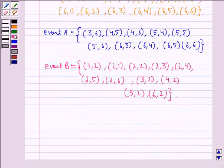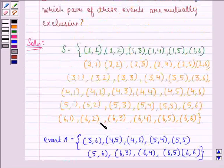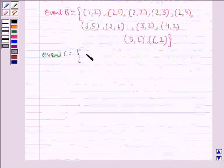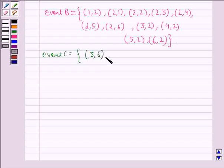Now, we write down the sample space for event C. Event C given to us is the sum is at least 7 and a multiple of 3. So, from the sample space, we see that such sample points are (3,6), (4,5), (5,4), (6,3), (6,6).